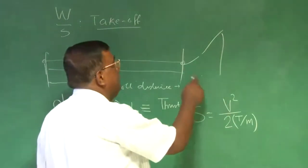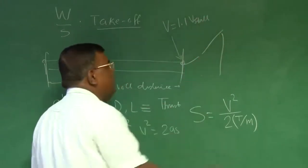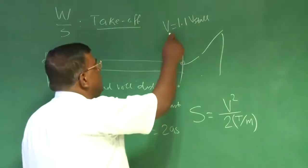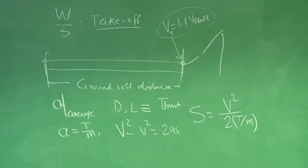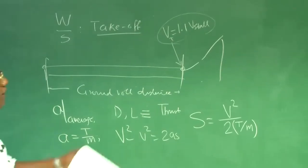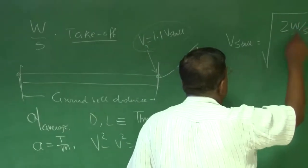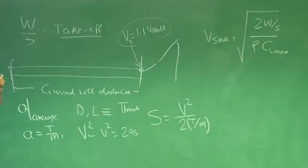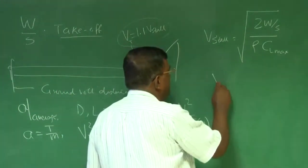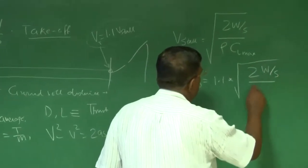We also know this v, which is the final velocity here, should be 1.1 times v_stall as per one of the regulations. Be careful about it. These sorts of numbers are very specific to different types of aircraft, whether civil or military, and these are guided by the regulatory bodies. You have no option to change those. Now if I use this, we find that v_stall is √(2W/S / ρC_L_max). Then I can easily see v_takeoff will be 1.1 times √(2W/S / ρC_L_max).